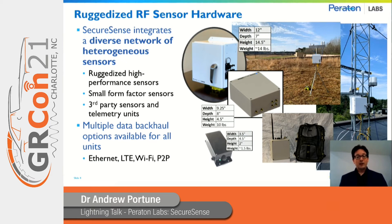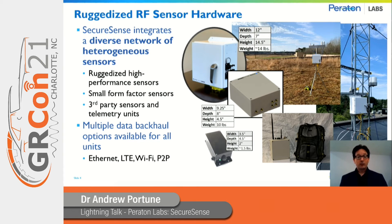Peraton Labs has designed its own ruggedized RF sensor hardware to be core to the SecureSense system. These include high-performance sensors designed in small form factors and intended to be low-cost. The objective is to allow for the deployment of a broad range of sensors in remote areas, forming a network of sensors that, in concert, could provide more access to the spectrum situational awareness required for an operation than a single sensor would. Sensors can be mounted to static locations, slid into backpacks, mounted to vehicles, and so on. We've also provided access to third-party sensors and telemetry units, as well as multiple data and power options.